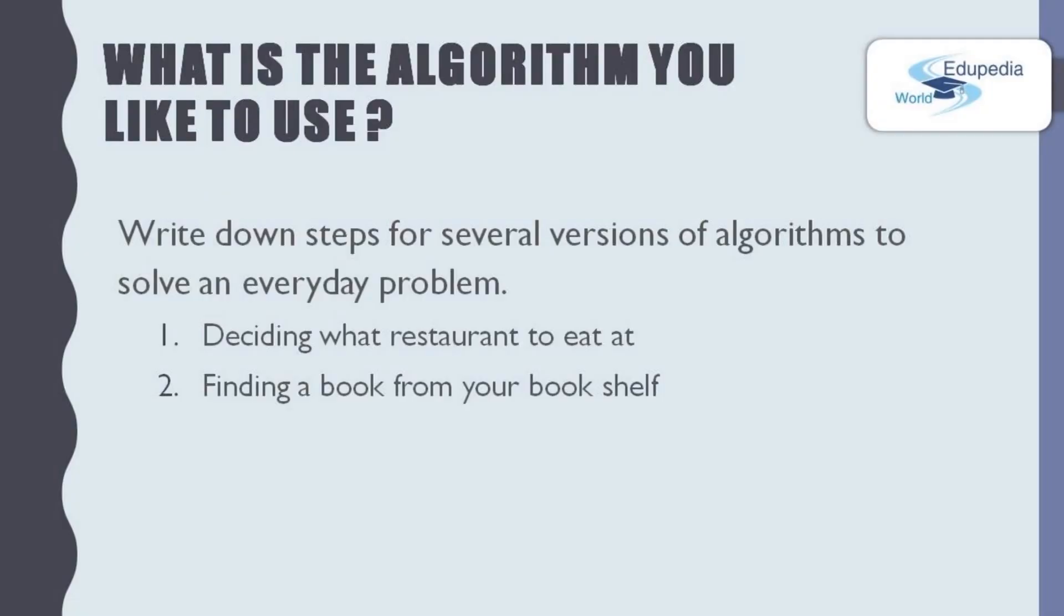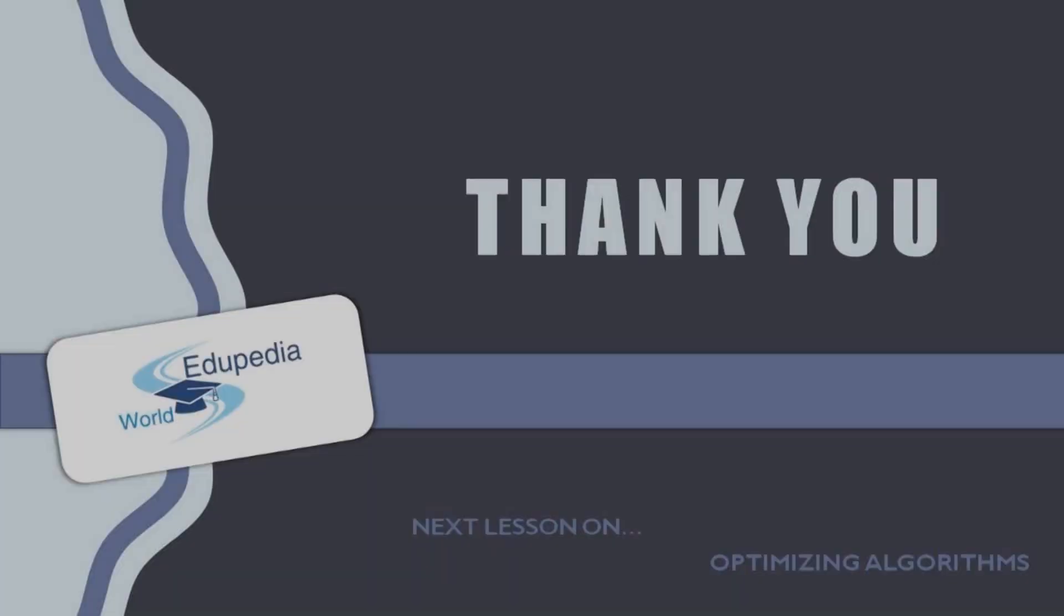Now, before winding up this episode, I want to give you few questions. You have to write down the steps for several versions of algorithms to solve these everyday problems. The first one is, deciding what restaurant to eat at. The second one is, finding a book from your bookshelf. You know, you have several preferences and for these problems, what are you going to choose? You have to write down that decision process. With that, we are going to end up this episode.